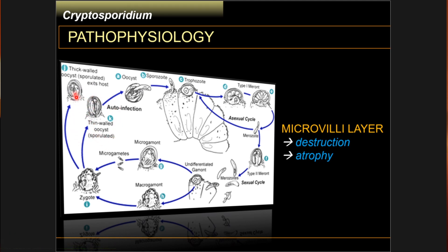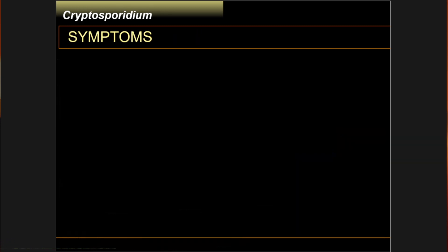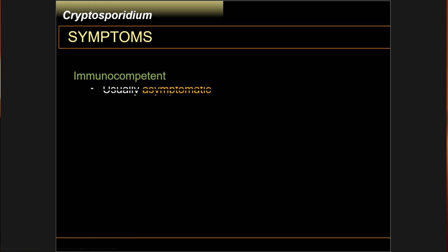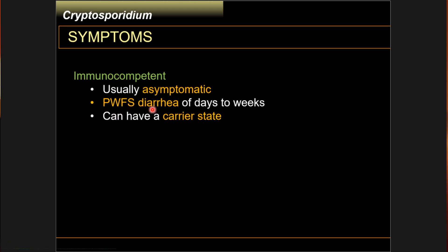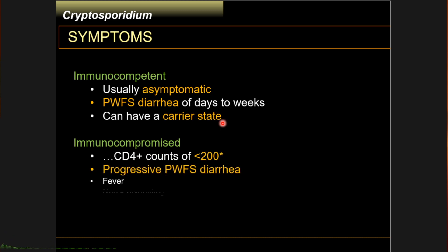Note the presence of already sporulated oocysts coming from the zygote, whether they exit the host or remain within the host for auto-infection. The symptoms of Cryptosporidium really depend on what type of patient it infects. In immunocompetent patients, cryptosporidiosis is usually asymptomatic, and if symptomatic, it develops as profuse watery foul-smelling diarrhea lasting from days to even weeks. Some patients become asymptomatic carriers.